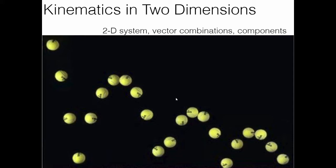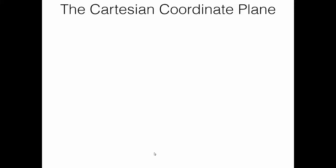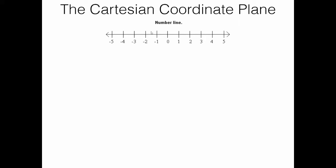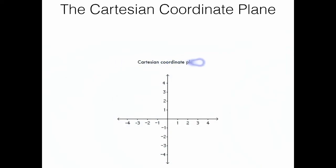Let's start first with this idea of the Cartesian coordinate plane — this is our two-dimensional world. What we're used to is the number line, which was our one-dimensional world. We could go right or left, and if we rotated it vertically, we could go up or down. Those were our only options. Well, that world is gone. We've now replaced it with two number lines whose zeros are at the same spot — this is the Cartesian coordinate plane.